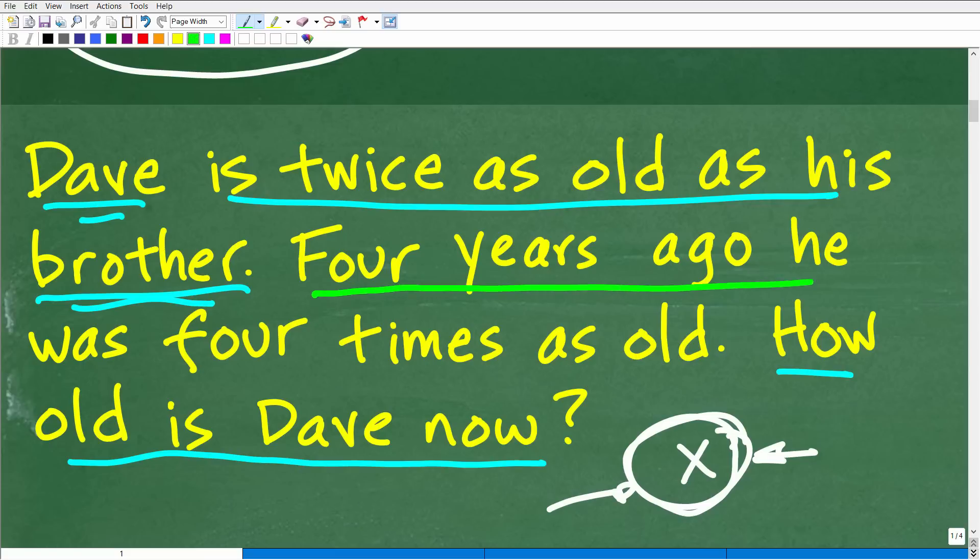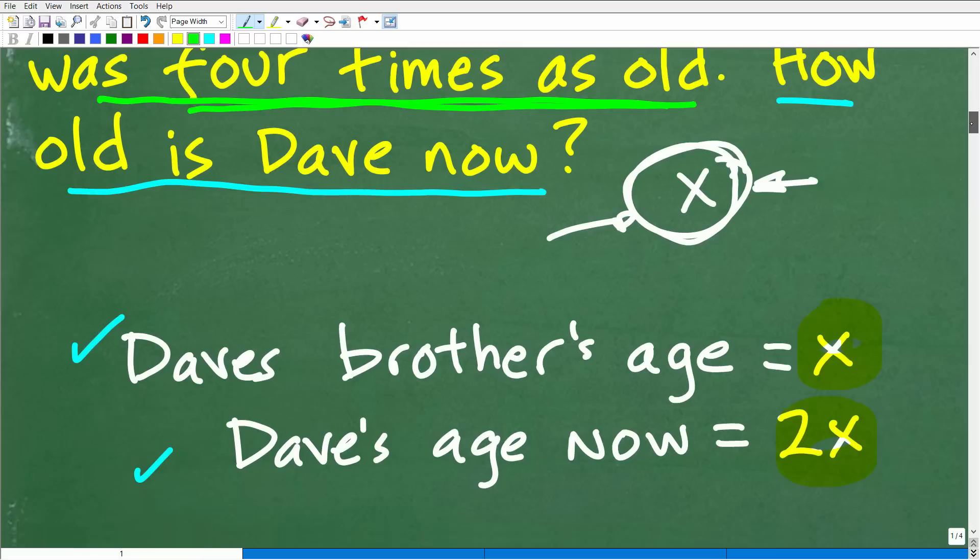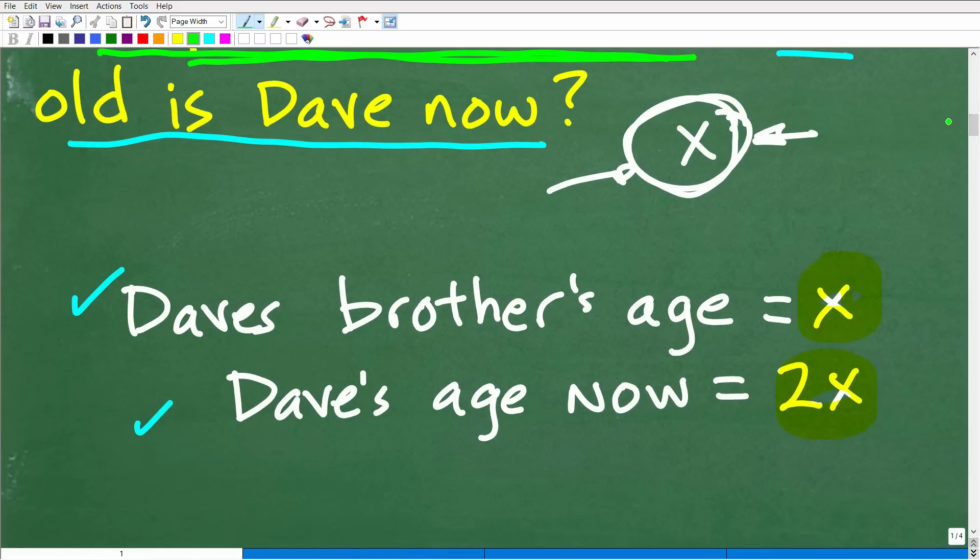It says four years ago, he, we're talking about Dave, was four times as old. We're going to need this sentence because this is how we're going to construct an equation. Our question is, how old is Dave? Dave is twice as old as his brother. We already established that with some variables. Four years ago, Dave was four times as old. Let's construct an equation using these variable terms, Dave's brother's age and Dave's age. We need to be thinking four years ago. If this is Dave's age right now, how old would Dave be four years ago? Let's think about that. How could you write an algebraic expression that would represent Dave's age four years in the past? If he's currently 2x, how old would he be four years ago? Well, wouldn't he be just 2x minus 4? His current age minus four would be his age four years ago.